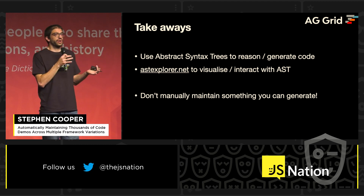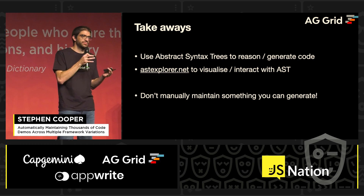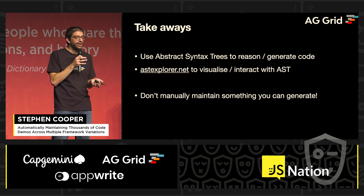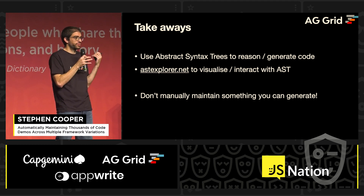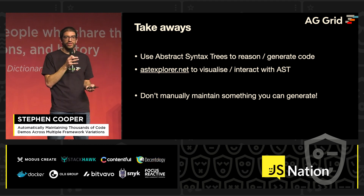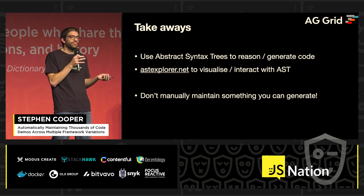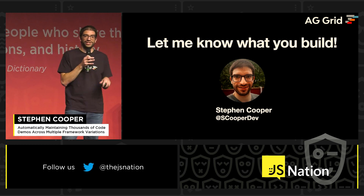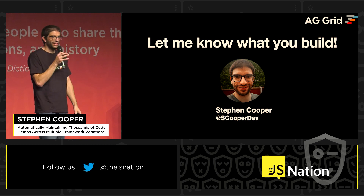As takeaways: you can use TypeScript abstract syntax trees to generate and reason about your code. A great way to get started is astexplorer.net — just drop your code in and it will show you what the AST looks like. And finally: don't manually maintain something that you can generate. I'd love to hear what you end up building with this — thank you.